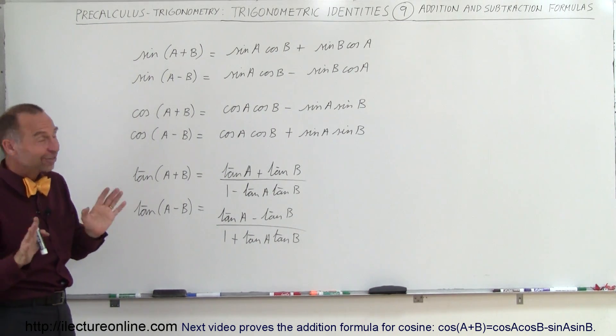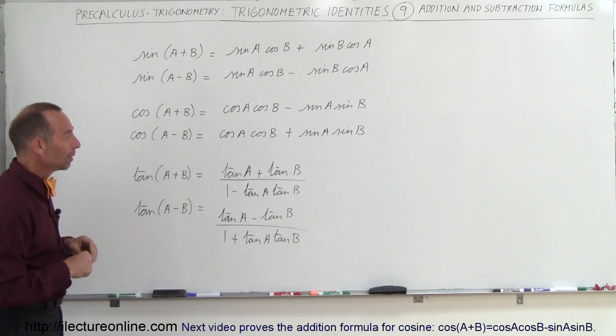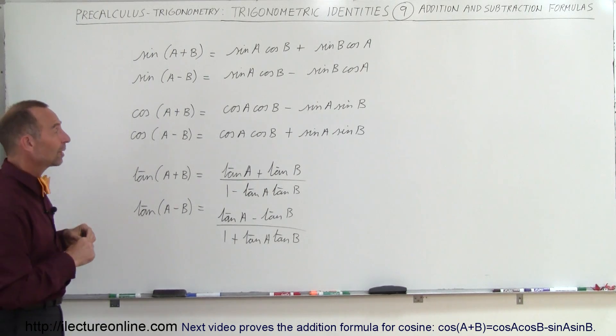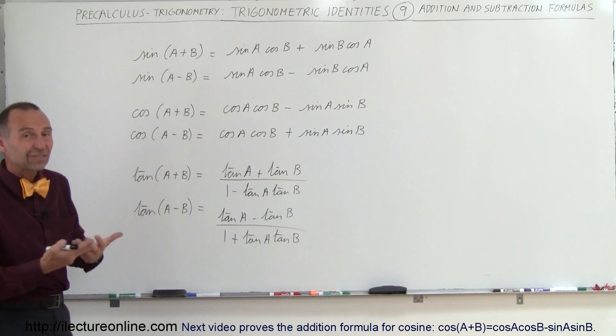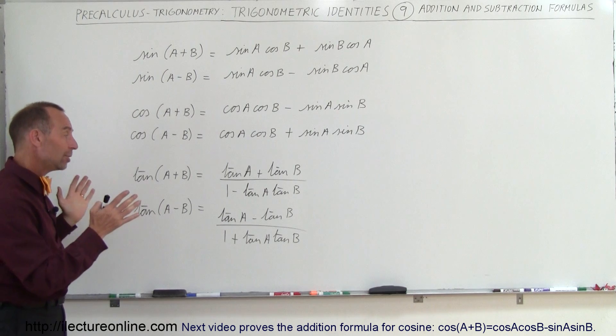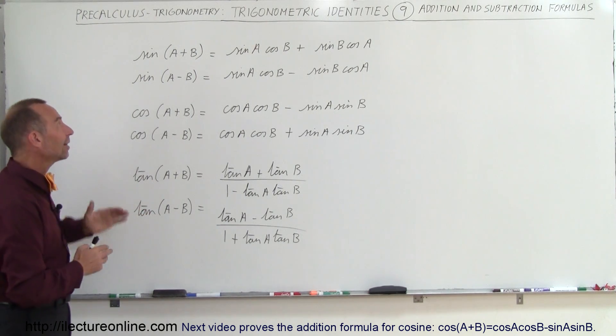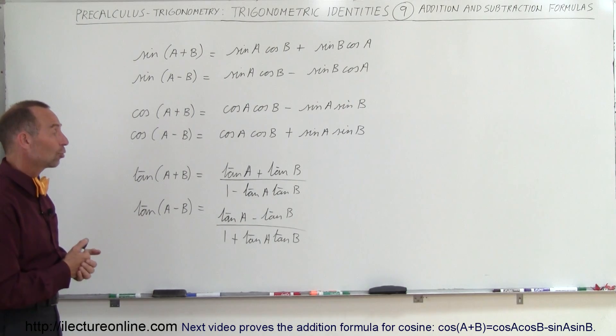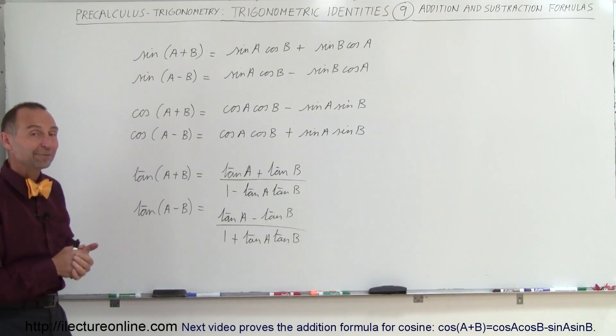Utilizing them is easier than proving them, which you will see in just a moment. But at least, again, take a good look at these. These are very useful trigonometric identities we call addition and subtraction formulas, and you want to try to memorize these. At least the sine and the cosine ones—they come in very handy in a lot of situations. So there you have it.